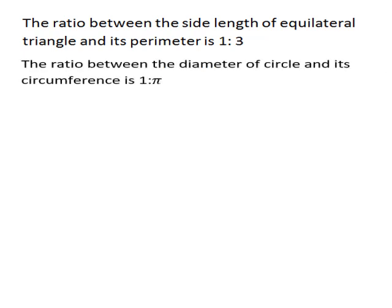The ratio between the diameter of a circle and its circumference is 1 to π. Because the diameter is 2r and the circumference is 2πr; simplifying by dividing by 2r gives 1 to π. And the ratio between the radius of a circle and its circumference is 1 to 2π.